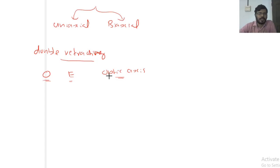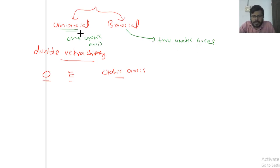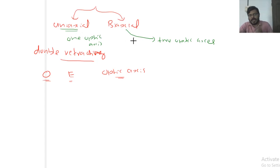For uniaxial crystals, there is only one optic axis — meaning there is only one direction along which the two rays propagate with the same speed. For biaxial crystals, there are two optic axes, meaning there are two directions along which the ordinary ray and extraordinary ray propagate with the same speed.